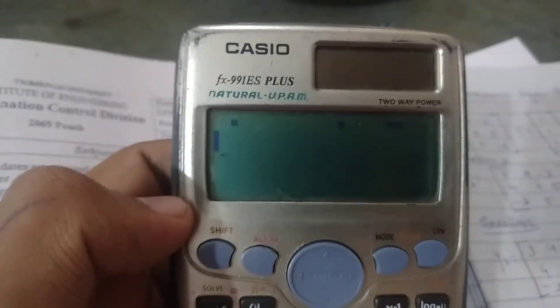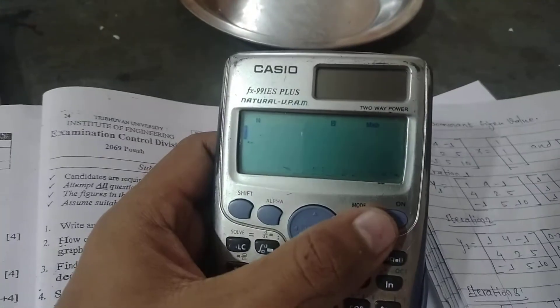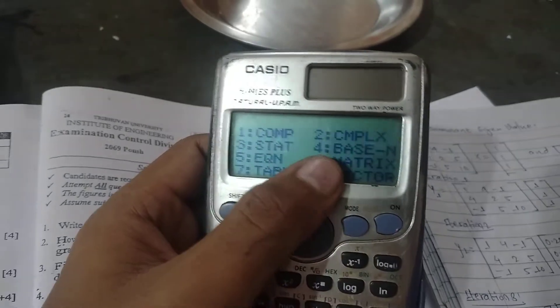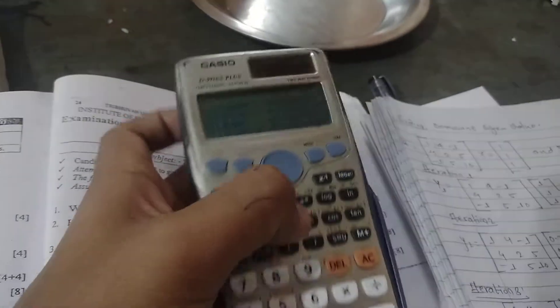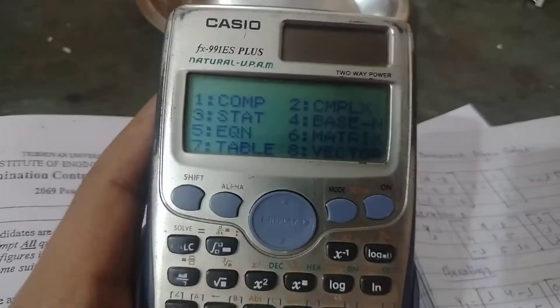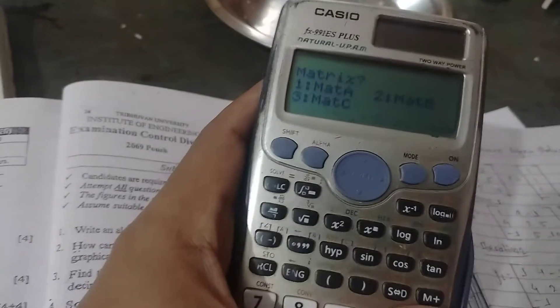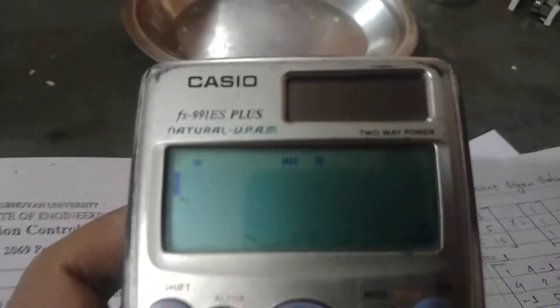Here I have the FX-911 ES Plus calculator. We have to go to the mode of matrix. Here we go in the matrix form. Then we have got a matrix in the area on the top of the center.